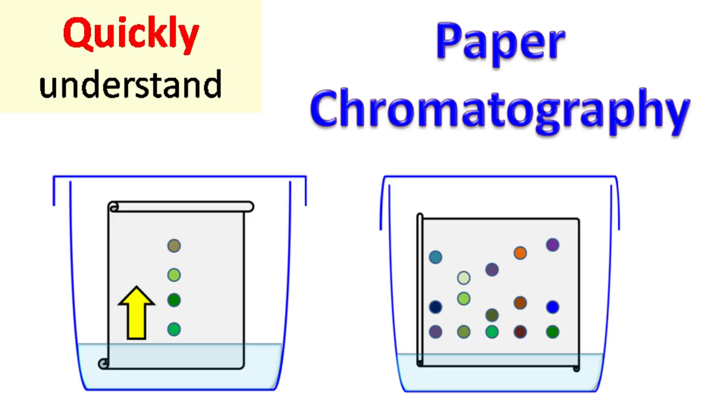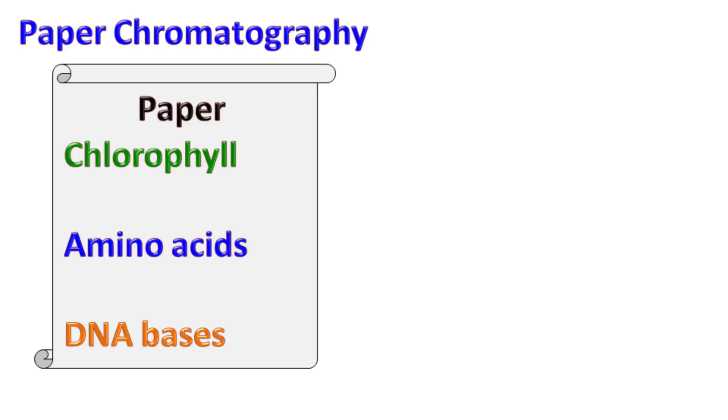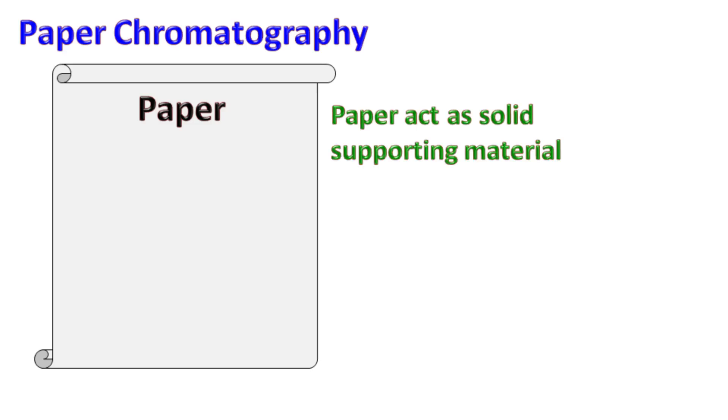Let's talk about paper chromatography. Paper chromatography is a common technique widely used for the separation of chlorophyll pigments, amino acids, DNA bases, etc.